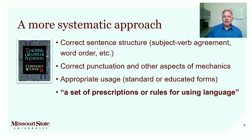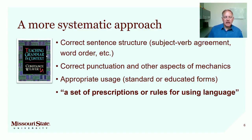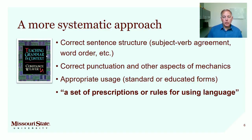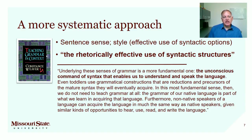She goes on to talk about a second area having to do with using the language system correctly — correct sentence structure, correct punctuation, and other aspects of mechanics, plus appropriate usage using the standard or educated forms. As opposed to a description of the language system, she calls this a set of prescriptions or rules for using language. And then thirdly, she says grammar has to do with style — what she calls sentence sense, or the effective use of all those syntactic options that a language gives us. She calls this third category the rhetorically effective use of syntactic structures — writing or speaking with style.